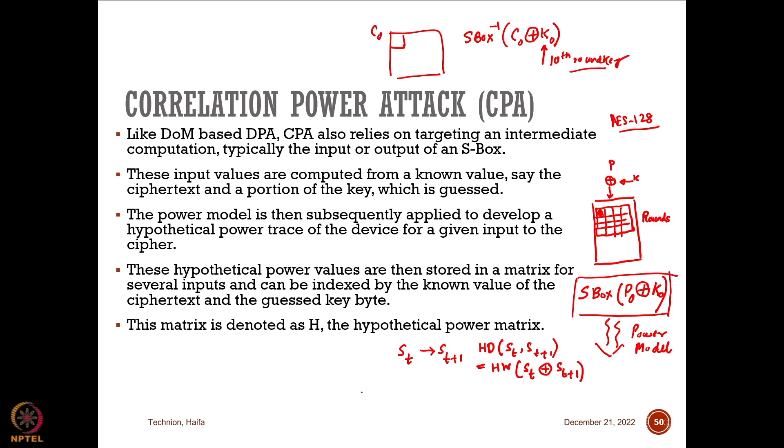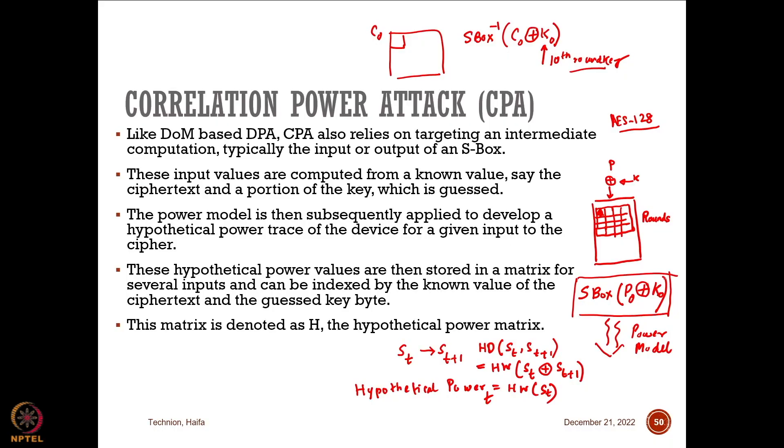You can use any of these power models, but for simplicity I will use the Hamming weight model. If my state is ST at this point, I define something called the hypothetical power, which is the Hamming weight of ST. I call it hypothetical because this estimation depends on the hypothesis I make about the key. I make one hypothesis — a guess — and later verify whether that hypothesis is true, which is what you do in any experiment.